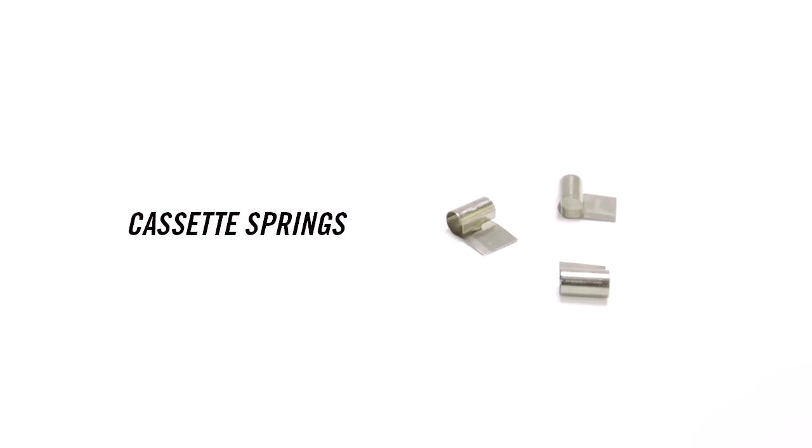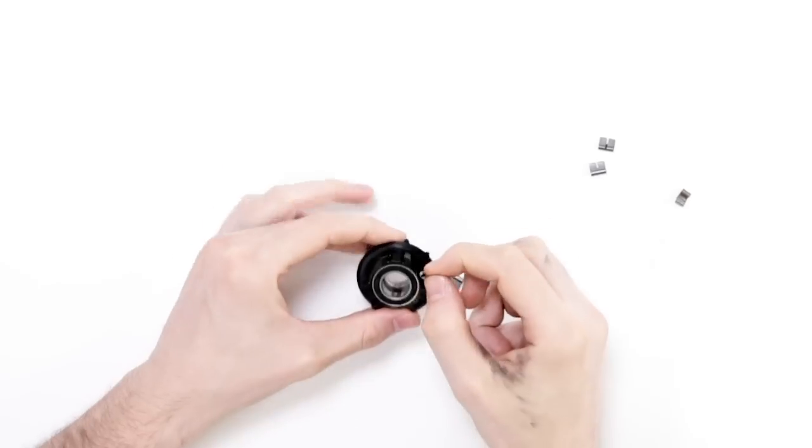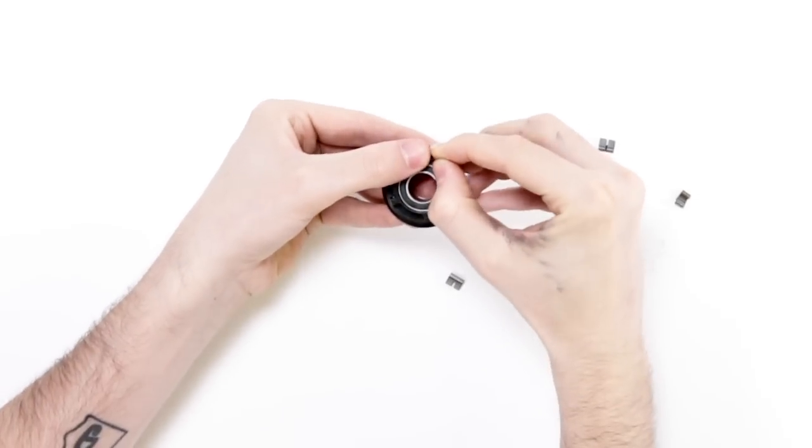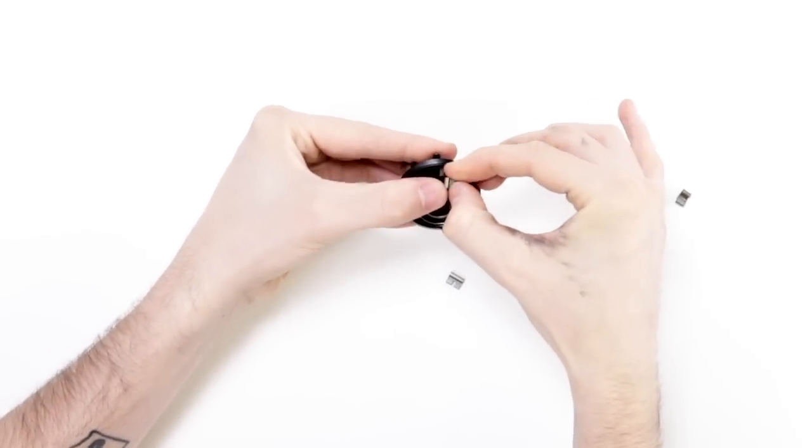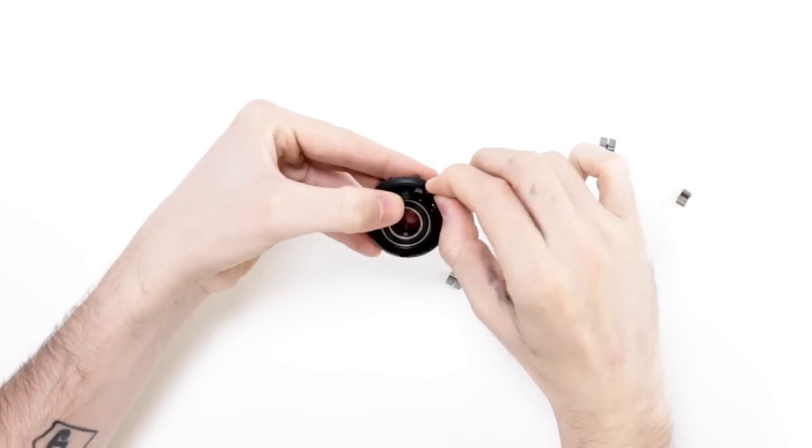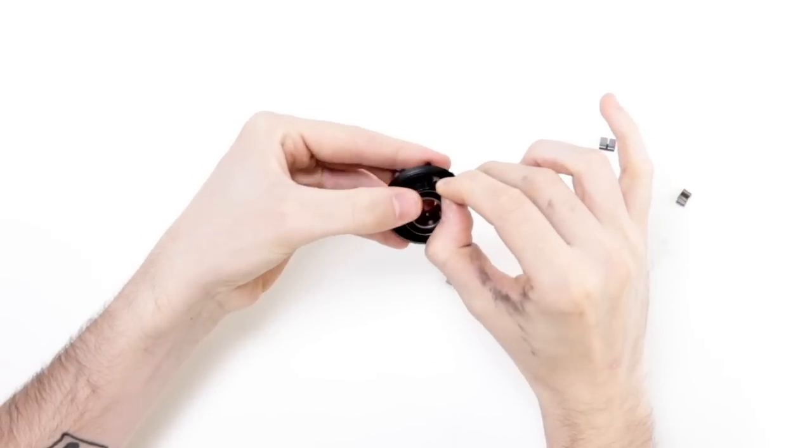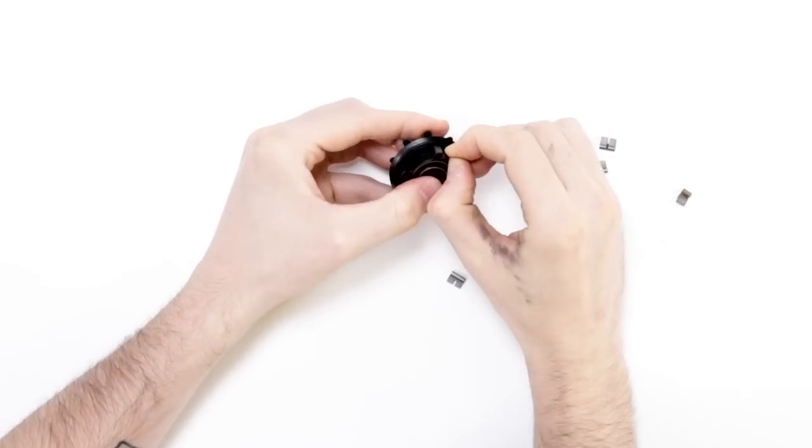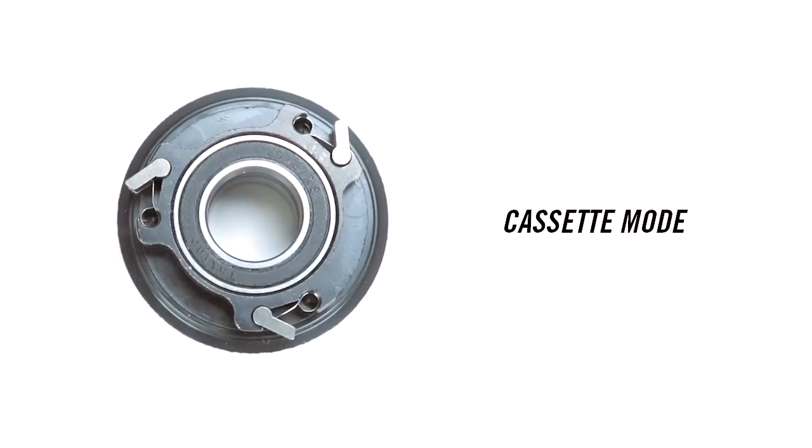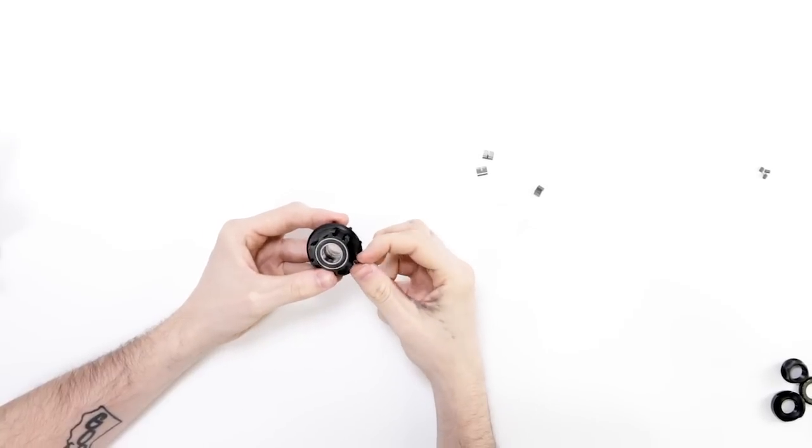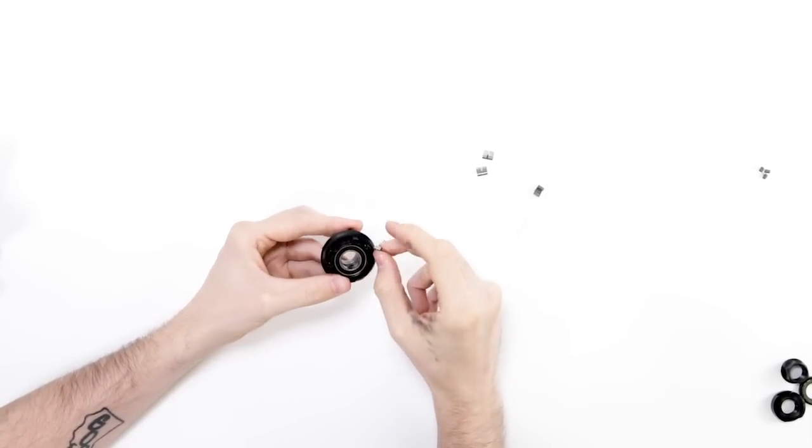You're now ready to reinstall the pools but this time with the cassette springs. So take the cassette spring, slide it into the slot and then hold it down carefully putting the pool back on over the top. If this is done correctly you will see that the spring pushes the pool up rather than hold it down which is what happens when the hub is in free coaster mode. Repeat this process three times for each of the three pools and springs.